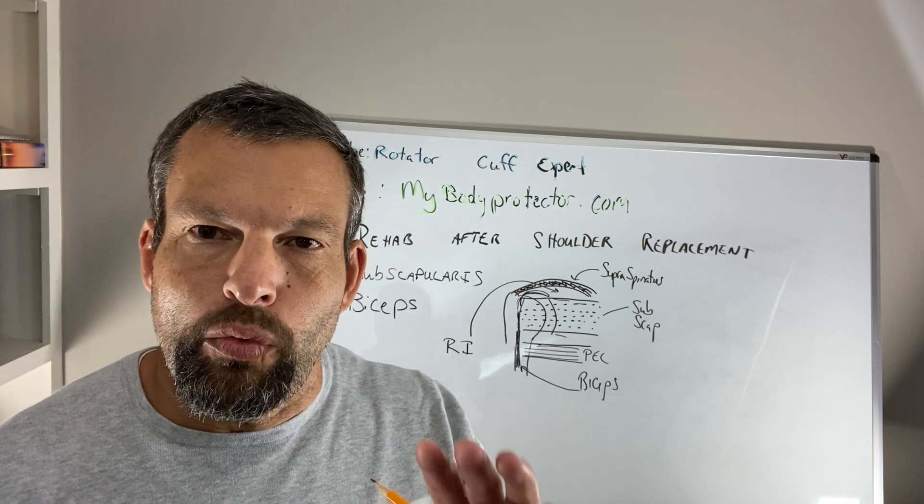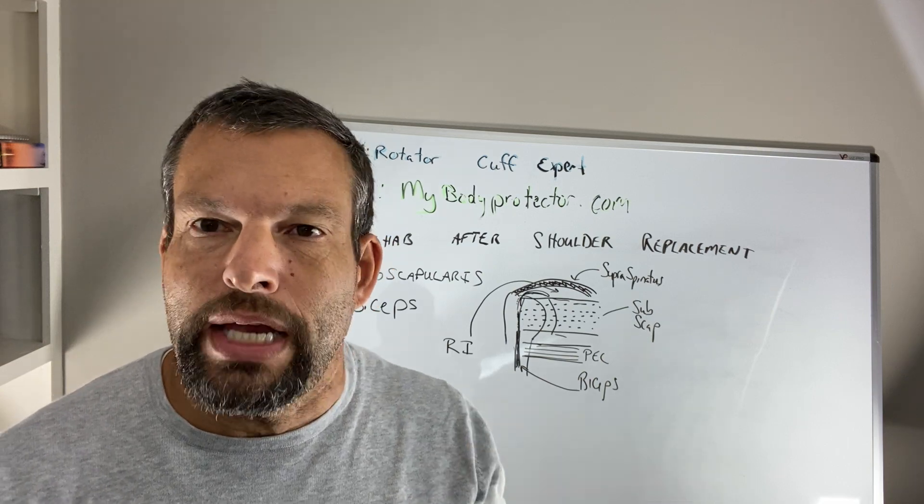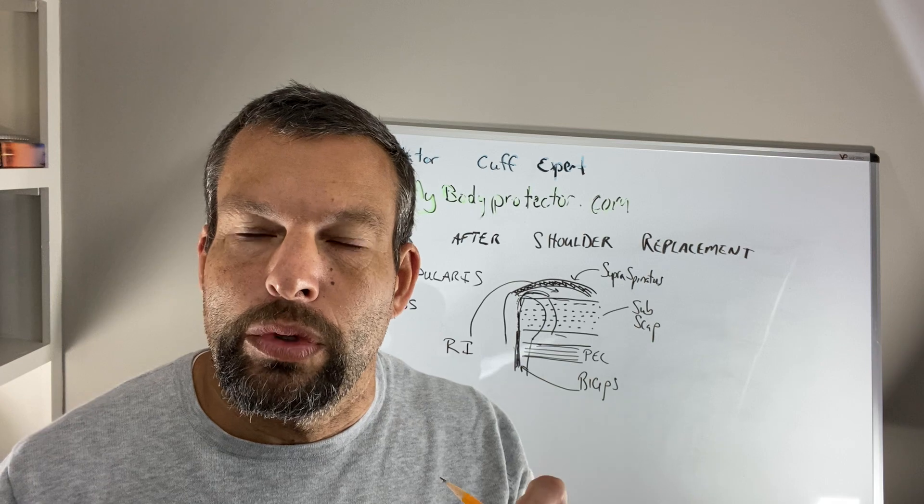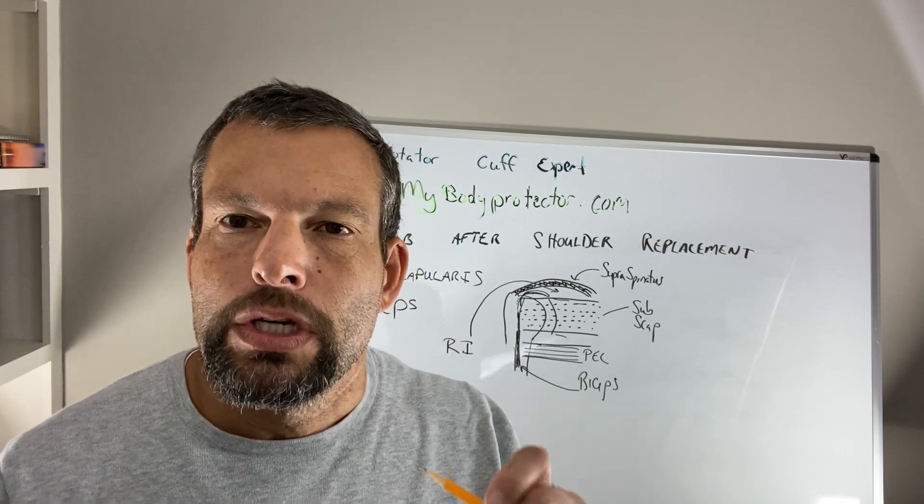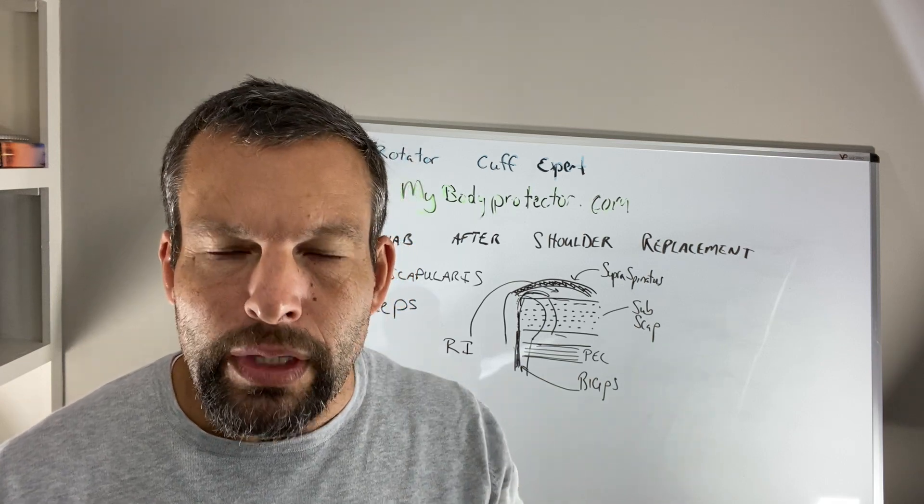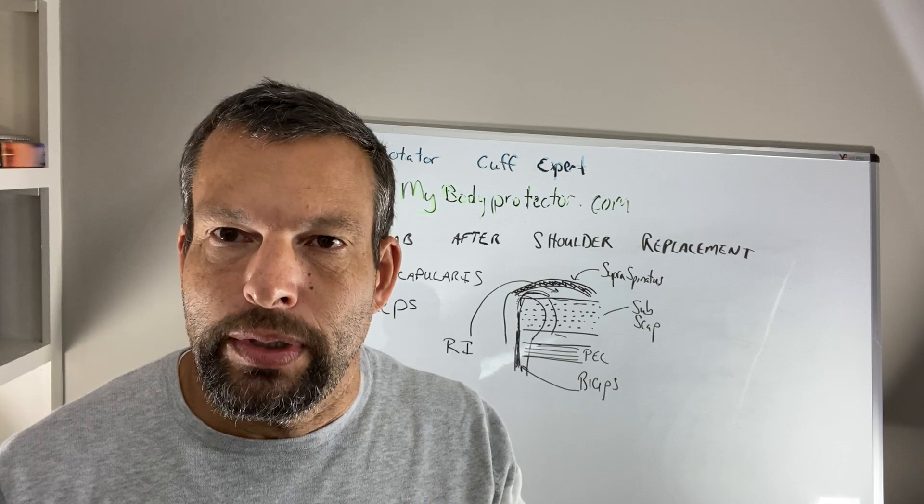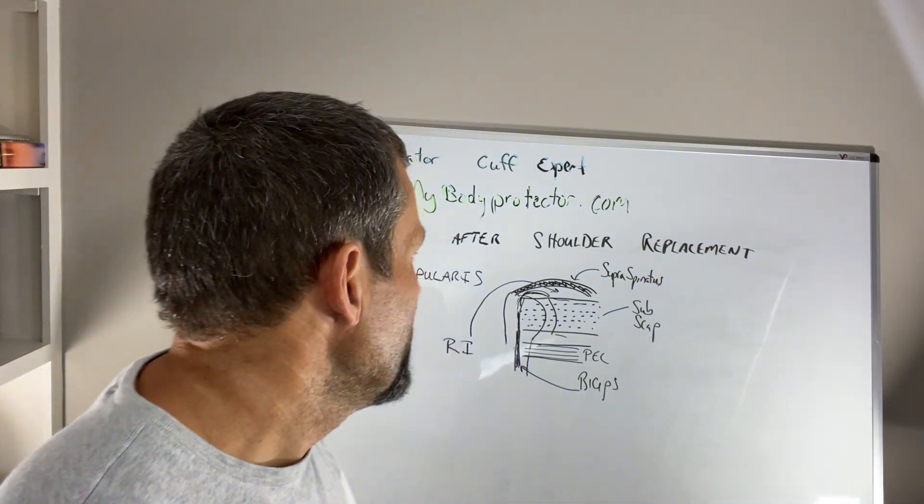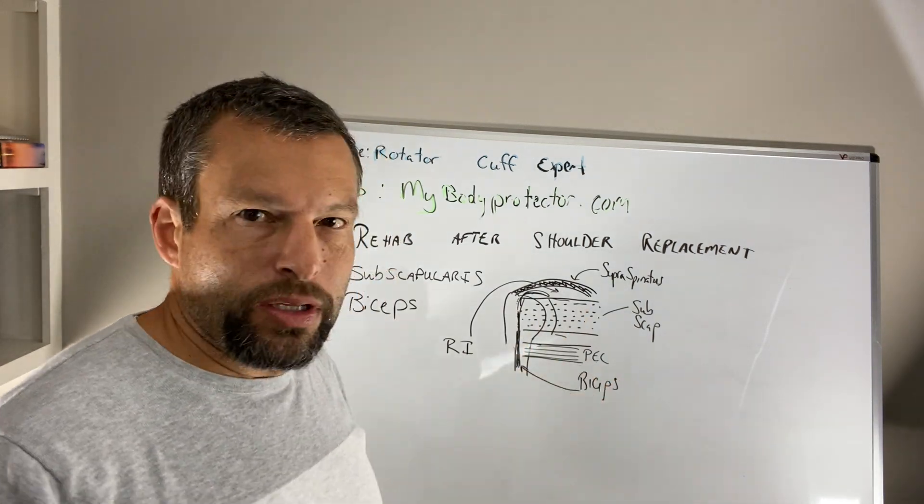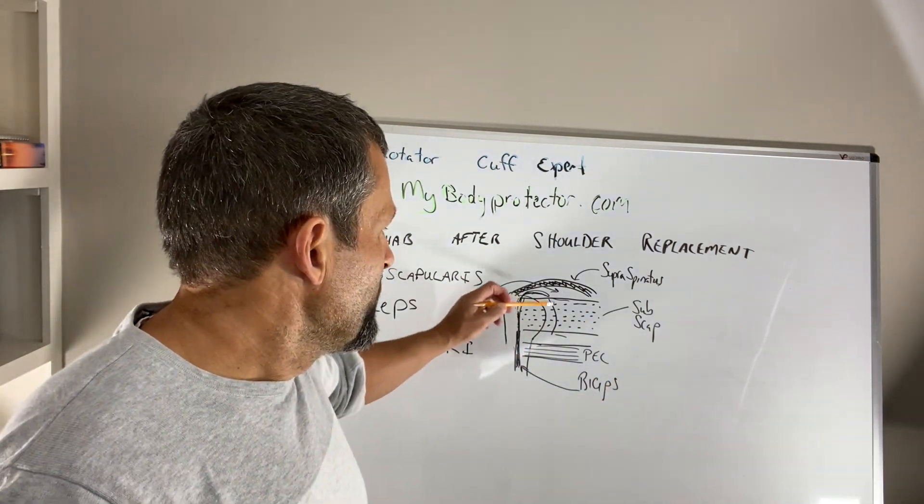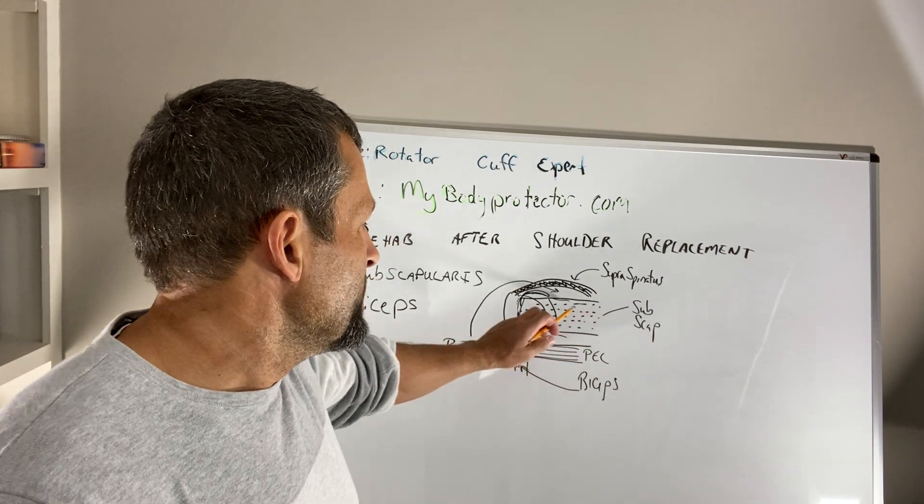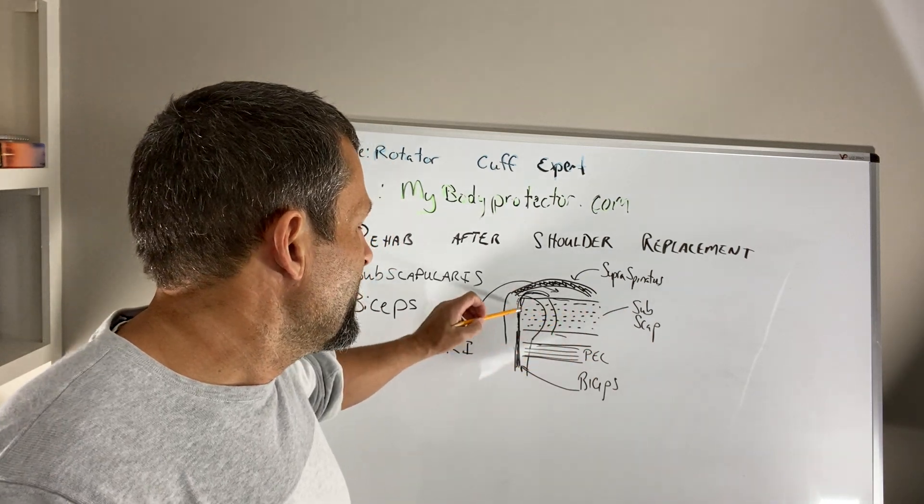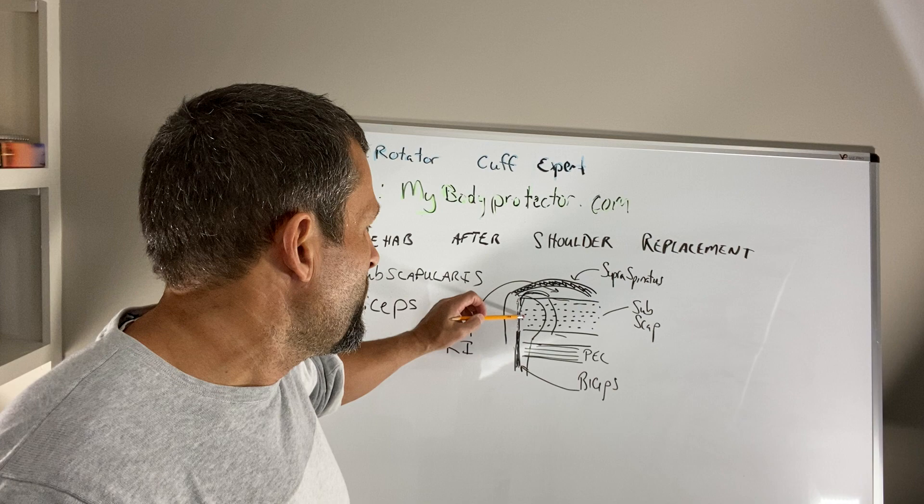So the key thing in restrictions after shoulder surgery, specifically after replacement surgery, is we have to protect the subscapularis. So if we look at this diagram, this is the subscapularis. So it's a little bit busy, but this is the ball and this is the socket and the subscapularis comes across it, the ball and socket, and it actually attaches to the very outside of the ball here.